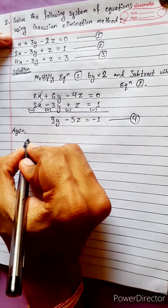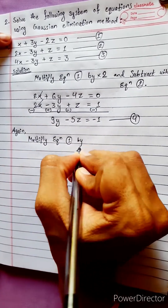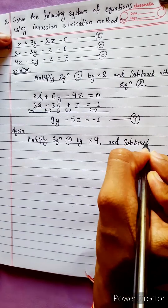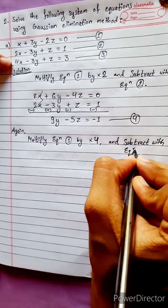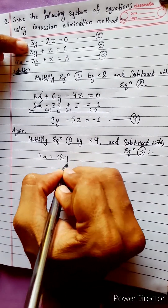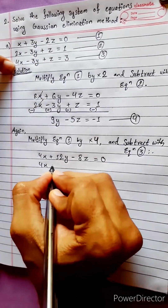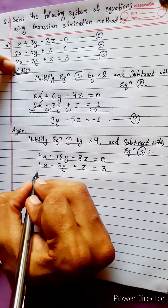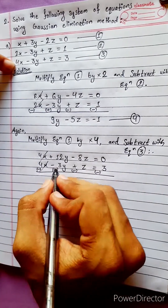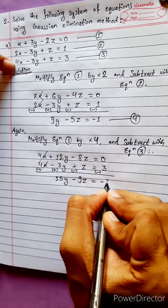Solving equations 1 and 3. Multiply equation 1 by 4 and subtract with equation 3. We get 4x + 12y - 8z = 0. Equation 3: 4x - 3y + z = 3. After subtracting with sign change, 12 plus 3 gives 15y - 9z = -3. This is equation 5.